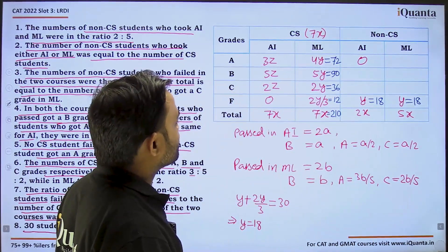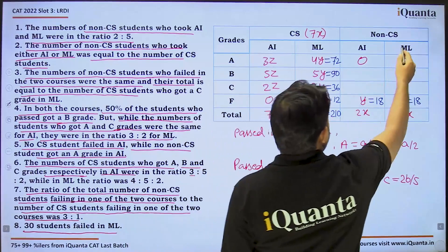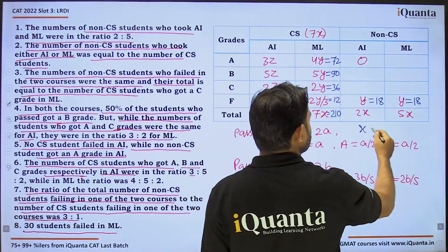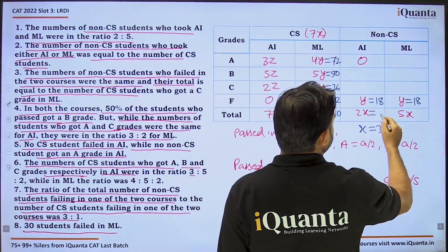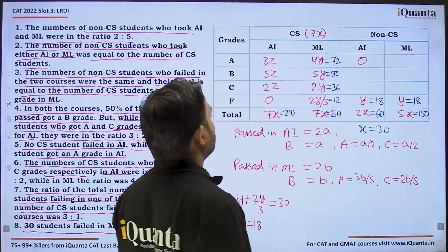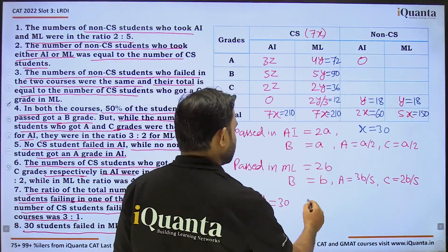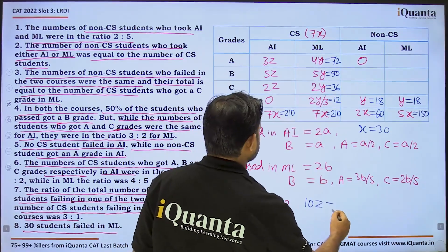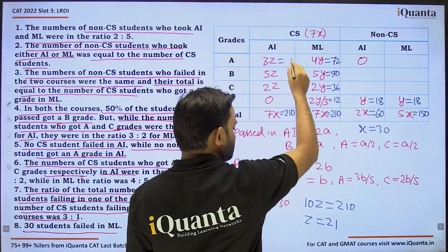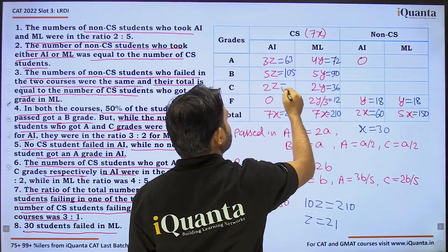Total CS students = 210, non-CS AI = 60, non-CS ML = 150. For the AI CS grade ratio, 3z + 5z + 2z = 10z = 210, so z = 21. Therefore CS A-grade in AI = 63, CS B-grade in AI = 105, CS C-grade in AI = 42.